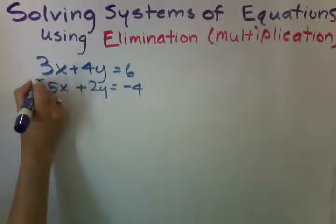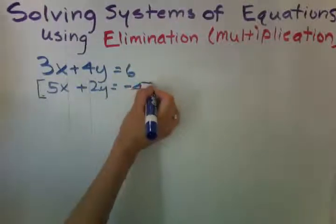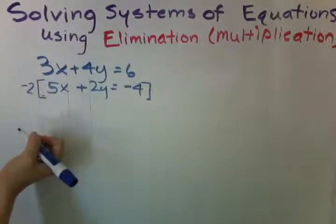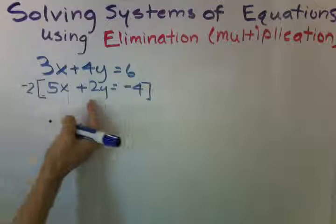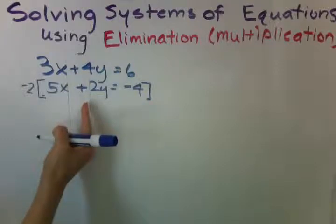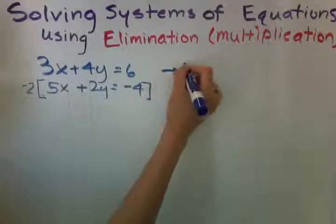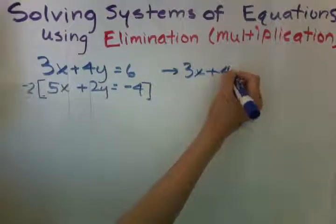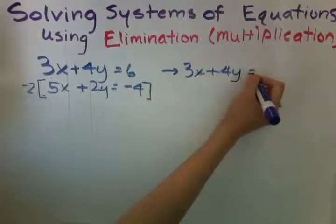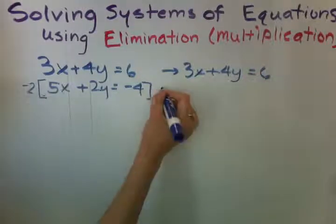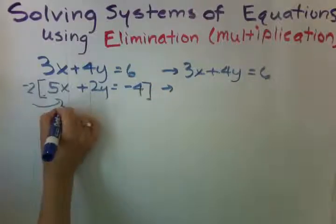We're going to multiply this whole entire equation by negative 2. So that when we distribute, we can turn this into a negative 4y so that we can eliminate the y's. So let's go ahead and rewrite this problem to the side. And I always suggest that you write it horizontally in order to reduce careless mistakes.